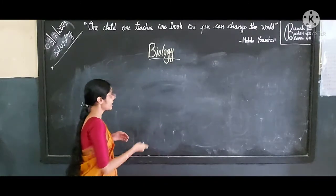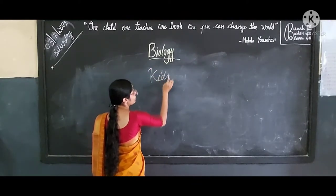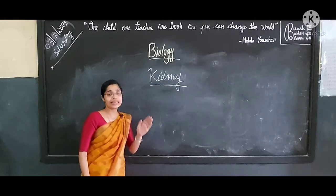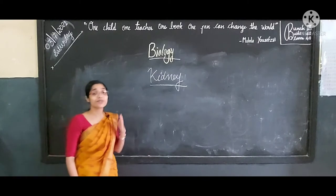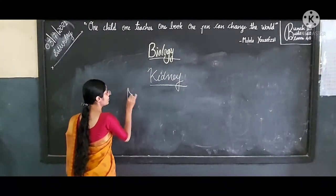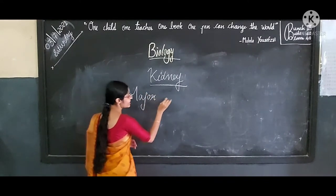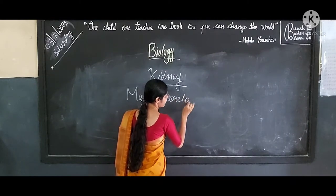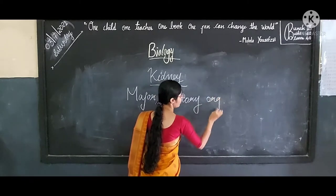So today we are going to learn more about kidney. You just note it down in your science diary. Kidneys are the major excretory organ that is present in our human body.